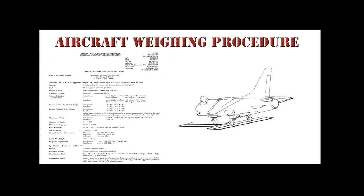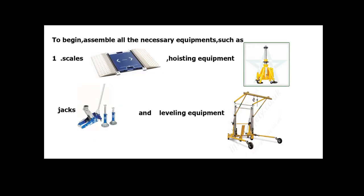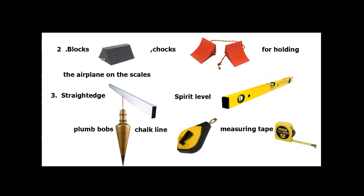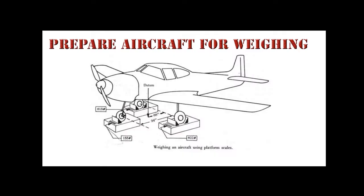Aircraft Weighing Procedure: Weighing an aircraft is a very important and exacting phase of aircraft maintenance and must be carried out with accuracy and good workmanship. Assemble all necessary equipment such as scales, hoisting equipment, jacks, leveling equipment, blocks, chocks, straight edge, spirit level, plumb bobs, chalk line, measuring tape, applicable aircraft specifications, and weight and balance computation forms. If possible, aircraft should be weighed in a closed building where there are no air currents to cause incorrect readings. An outside weighing is permissible if wind and moisture are negligible.